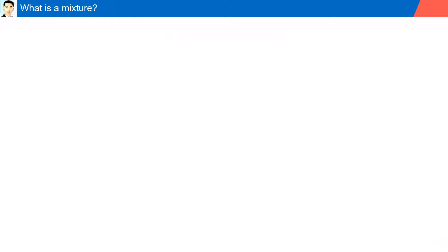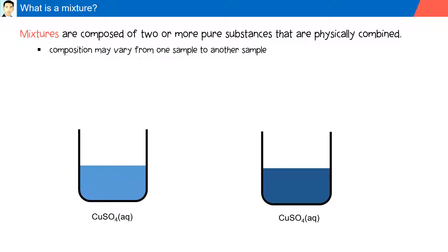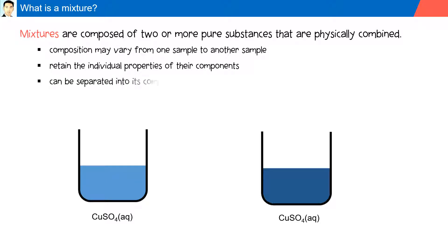What is a mixture? Mixtures are composed of two or more pure substances that are physically combined. Composition may vary from one sample to another. They retain the individual properties of their components, and they can be separated into their components by physical methods, e.g. filtration.